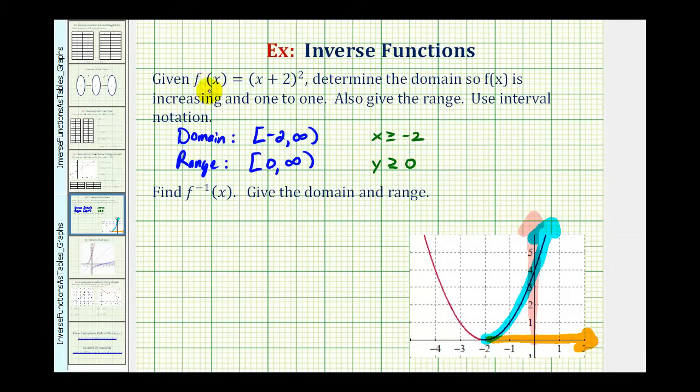With this restriction, the function f is now one to one so we can find f inverse of x. To do this, let's first write the original function replacing f of x with y. So we'd have y equals the quantity x plus two squared and then to find the inverse, we interchange the x and y variables and then solve for y. So we have x equals the quantity y plus two squared and now we'll solve this for y.